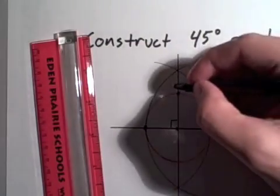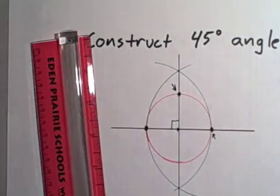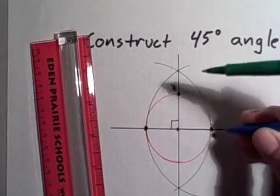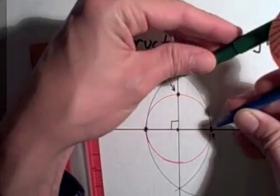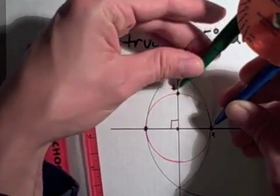It's helpful to use these two points. Put your compass point on one, pen on the other, and draw an arc outward.